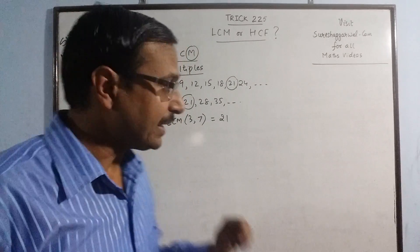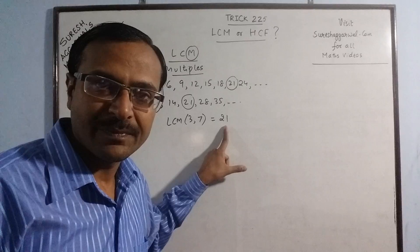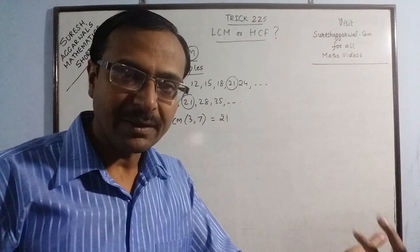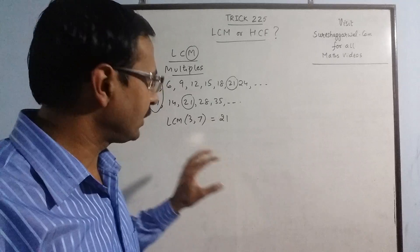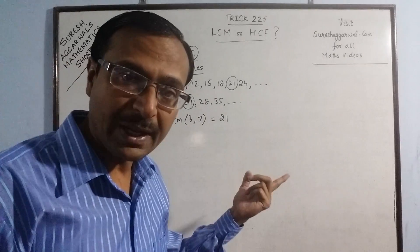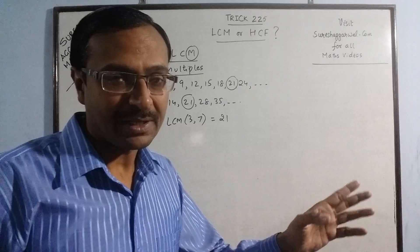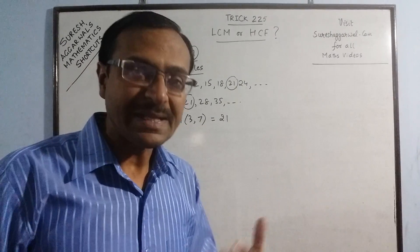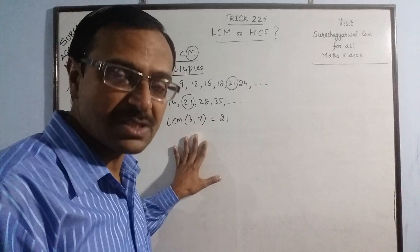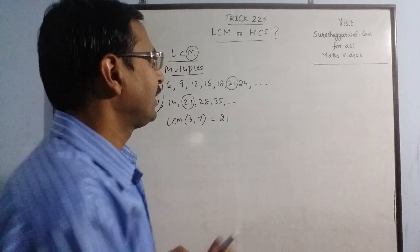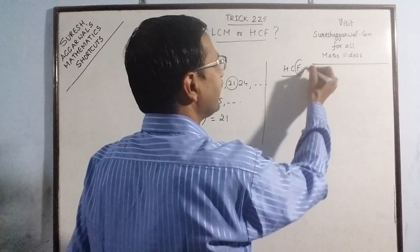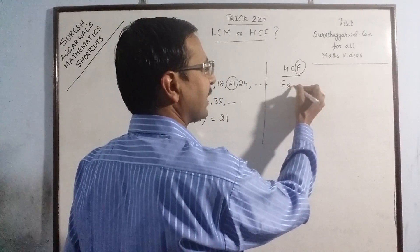The important point to understand here is that the LCM of two numbers is always greater than or equal to the numbers. The numbers are 3 and 7, and the LCM is 21, so 21 is much greater than 3 and 7. LCM is always greater than the numbers whose LCM is found. When we talk of HCF, it involves the letter F — F means factor.